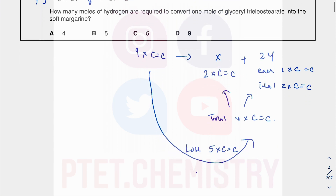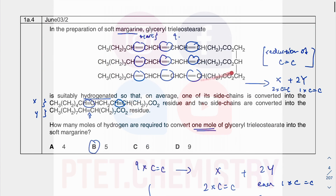Since 5 C=C double bonds are lost, you need 5 H–H bonds (5 molecules of H₂) to convert one mole of the starting material into the required product. That's the answer, found just by reading through what is happening.